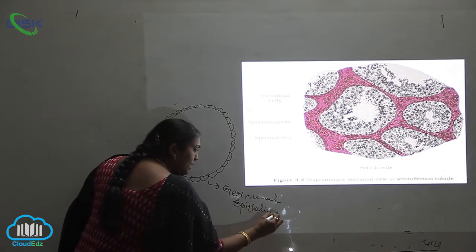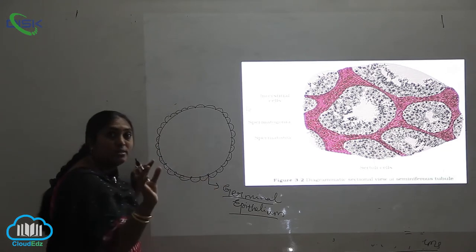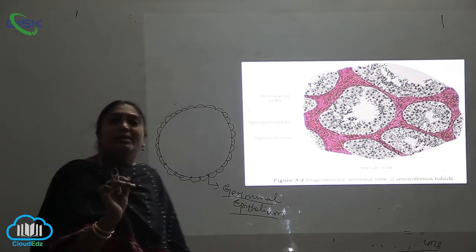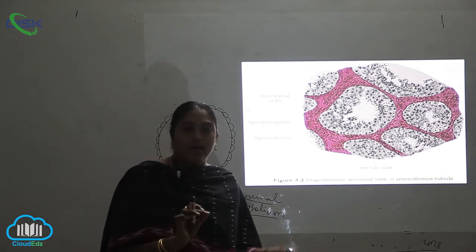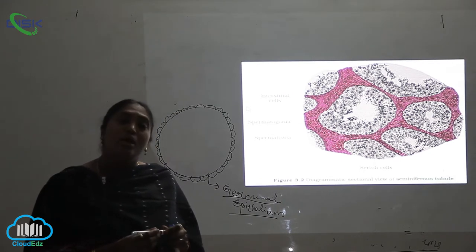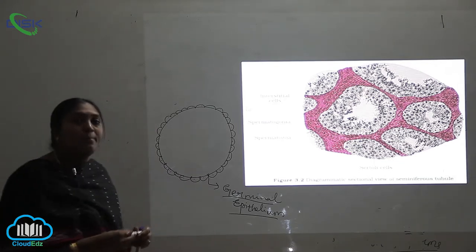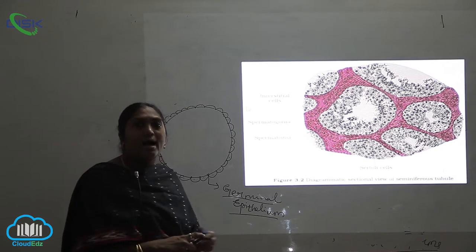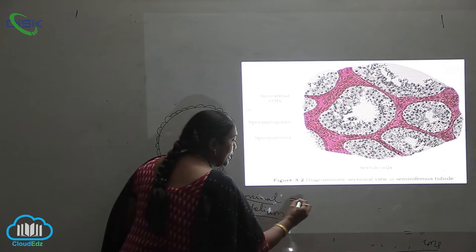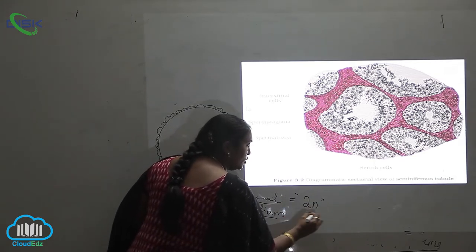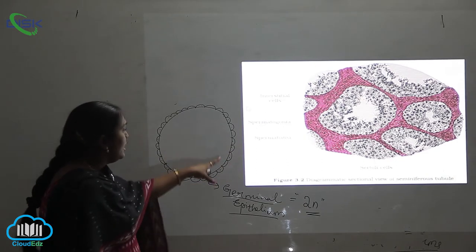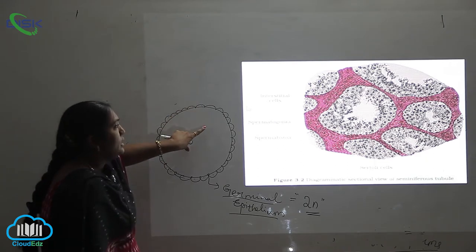Germinal epithelium is where the production of the germ cells takes place. How are they forming? Through the repeated mitotic divisions. First two stages it will be mitotic divisions, later on it will be meiosis. The number of chromosomes which are here, they are always diploid, they are always diploid. The meaning is 2n number of chromosomes, the chromosomes are diploid. So you can see the germinal epithelial cells which are the outermost regions.